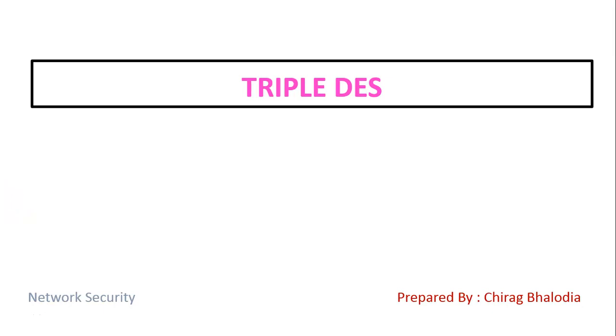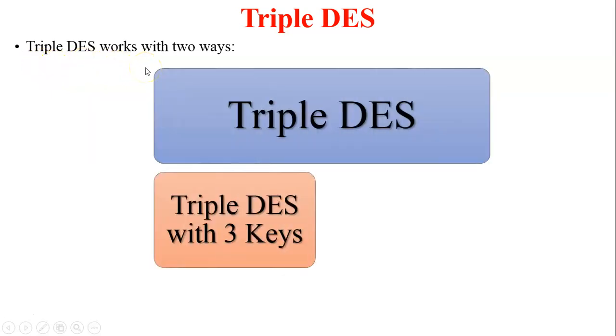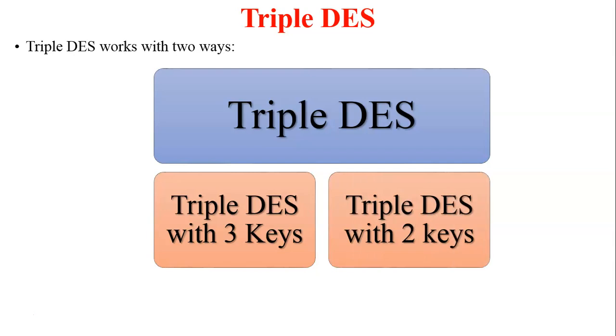Hello friends, myself Chirag. In this video I am going to discuss Triple DES — Triple Data Encryption Standard — a topic of network security. Before discussing Triple DES, it is important to know why Triple DES is used: to increase the complexity and reduce the weakness of DES. Triple DES works in two ways: Triple DES with three keys, and Triple DES with two keys. We will discuss both types in this video.